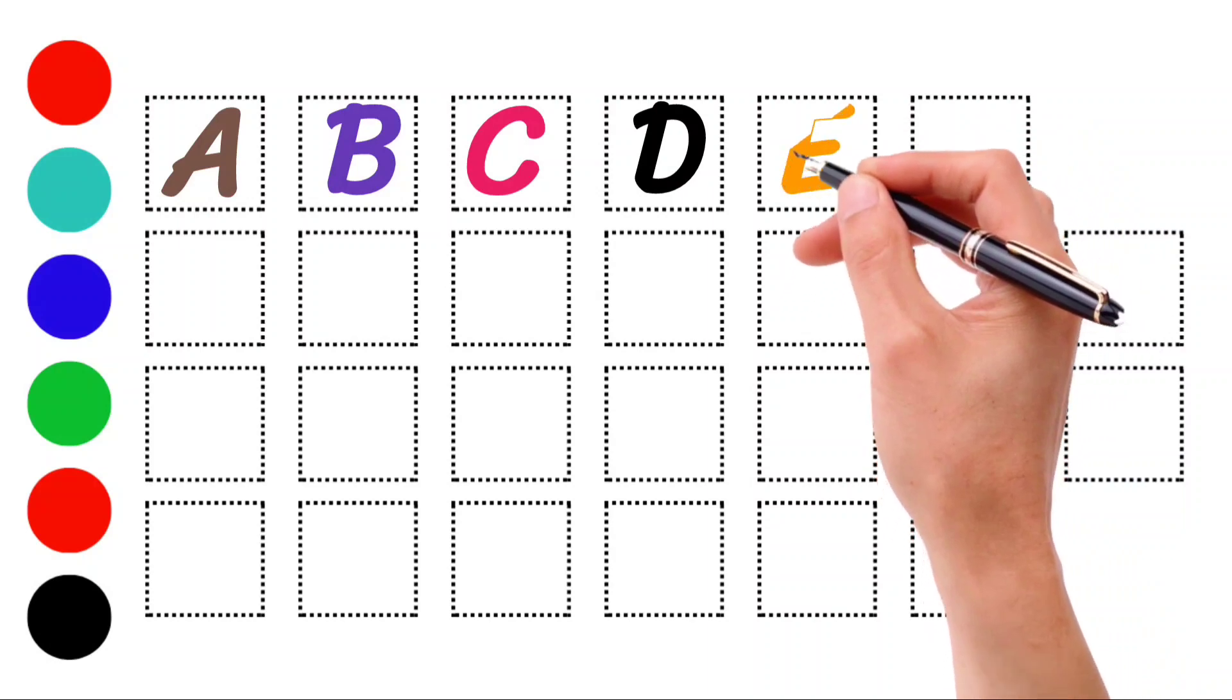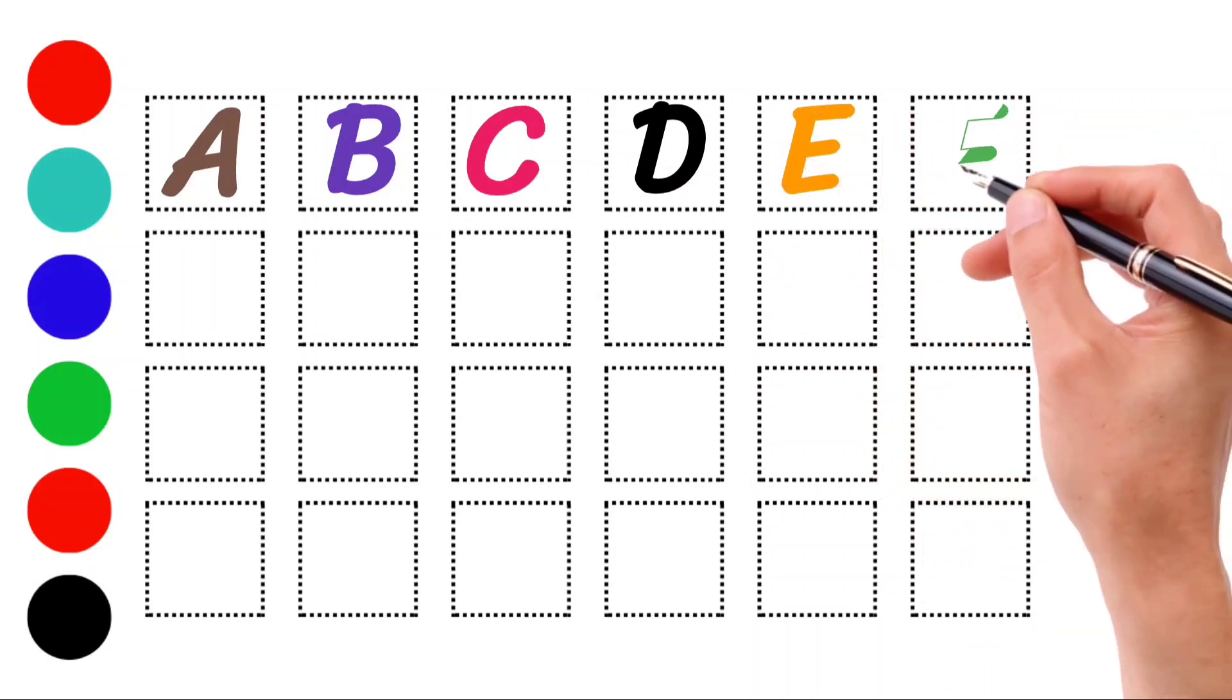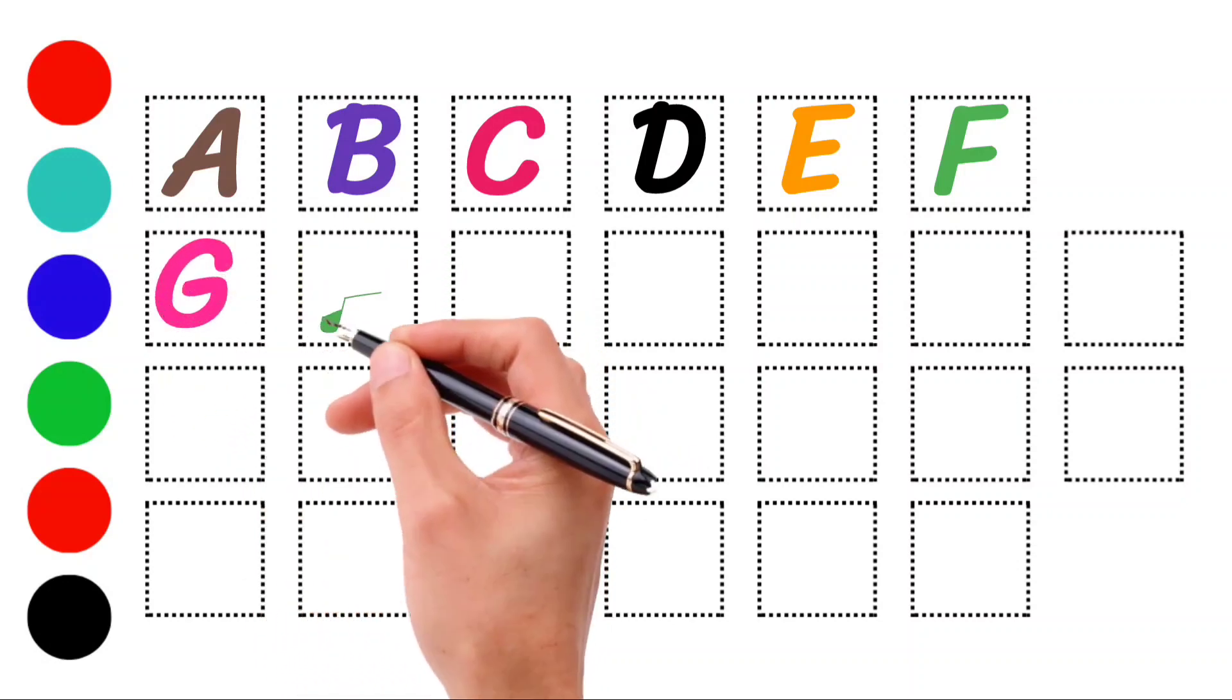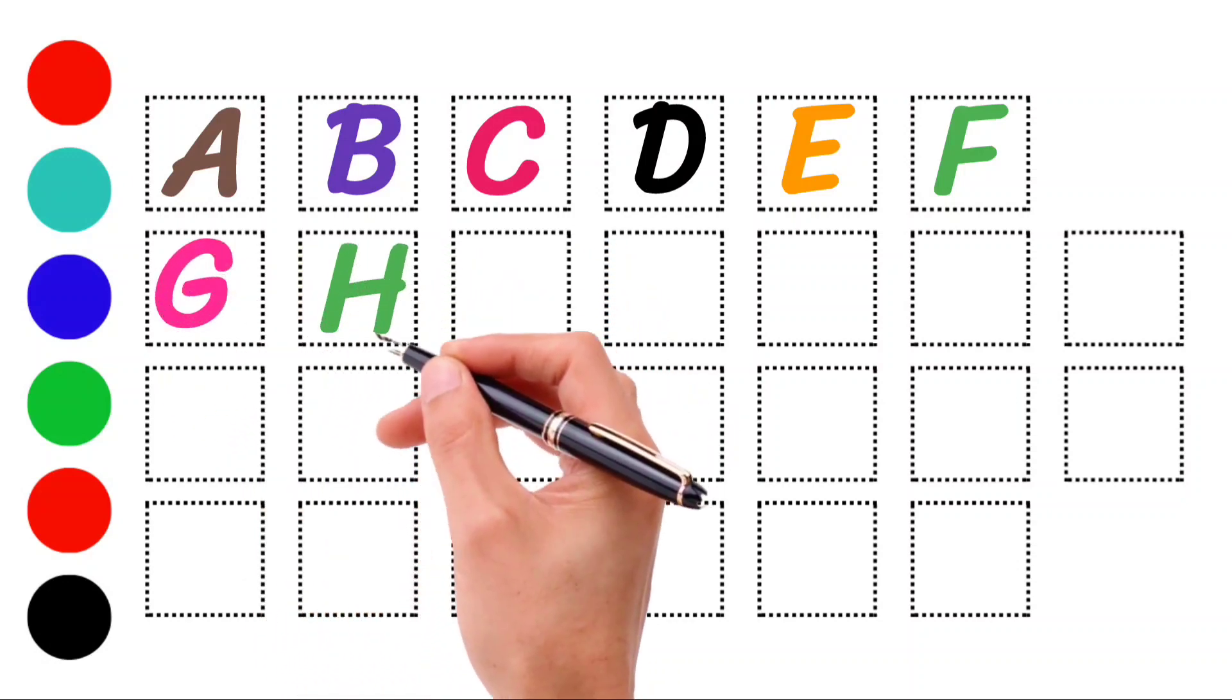E, E for Egg. F, F for Follower. G, G for Garden. H, H for Horse.